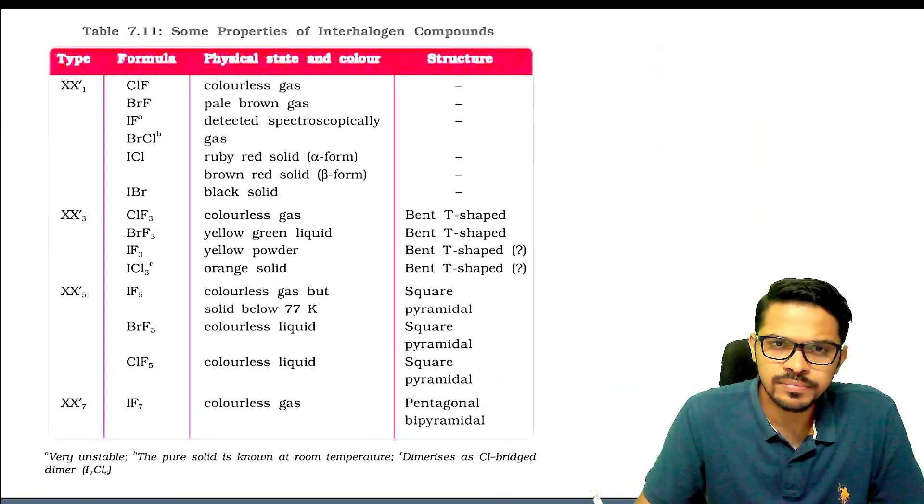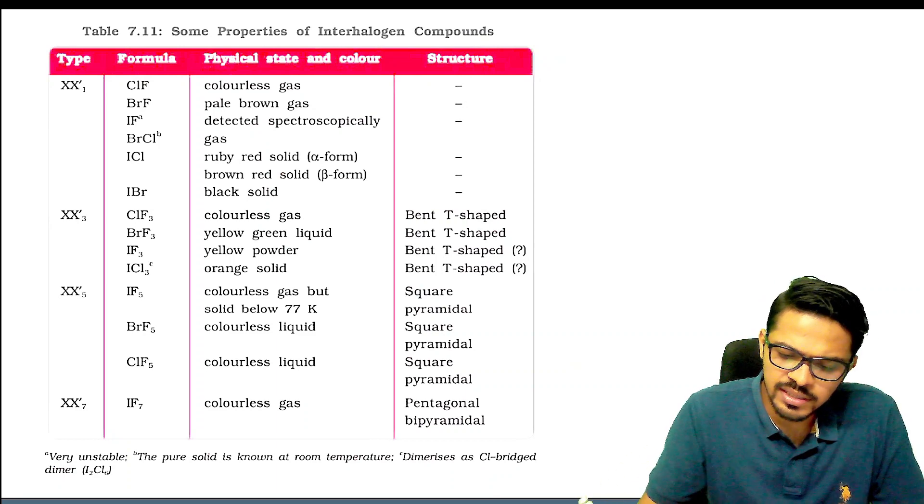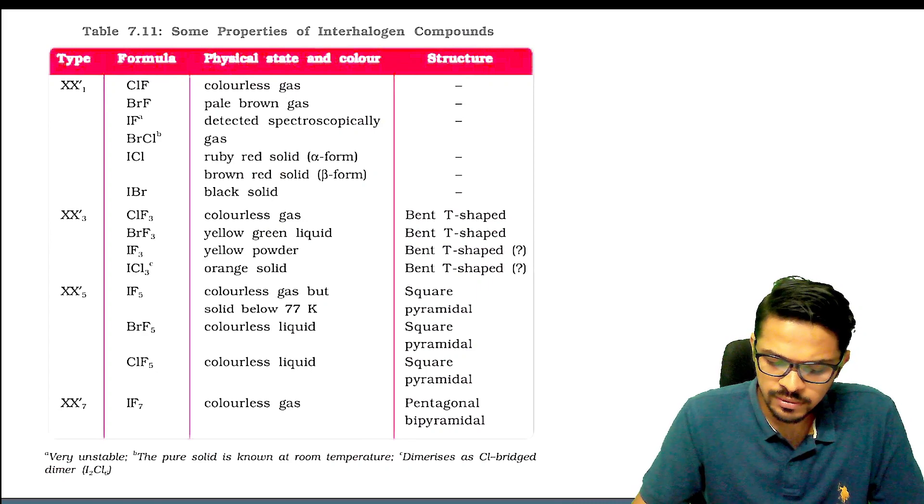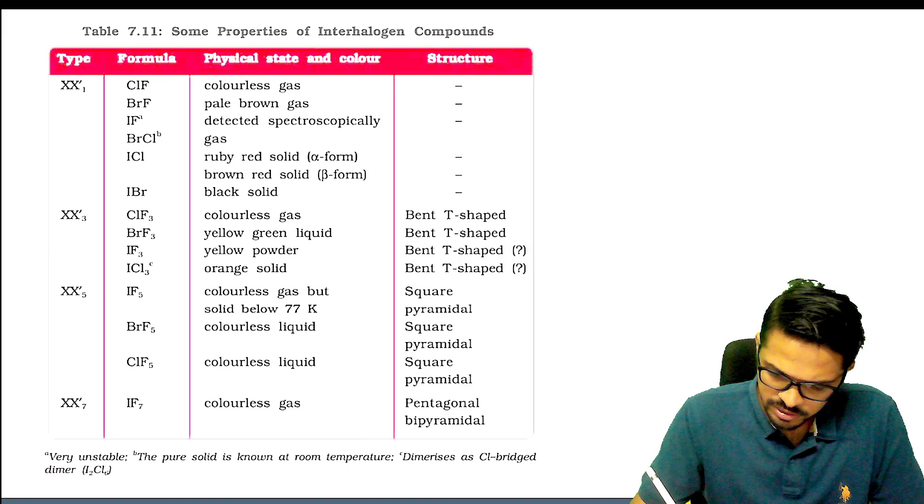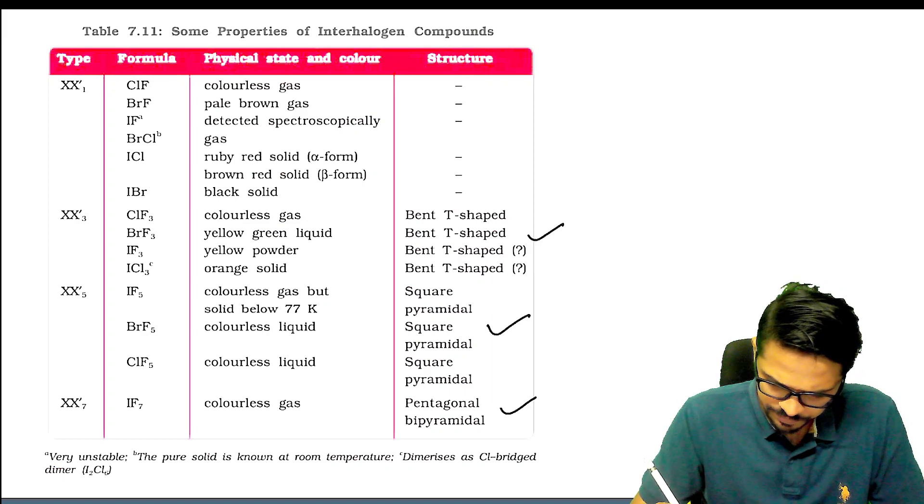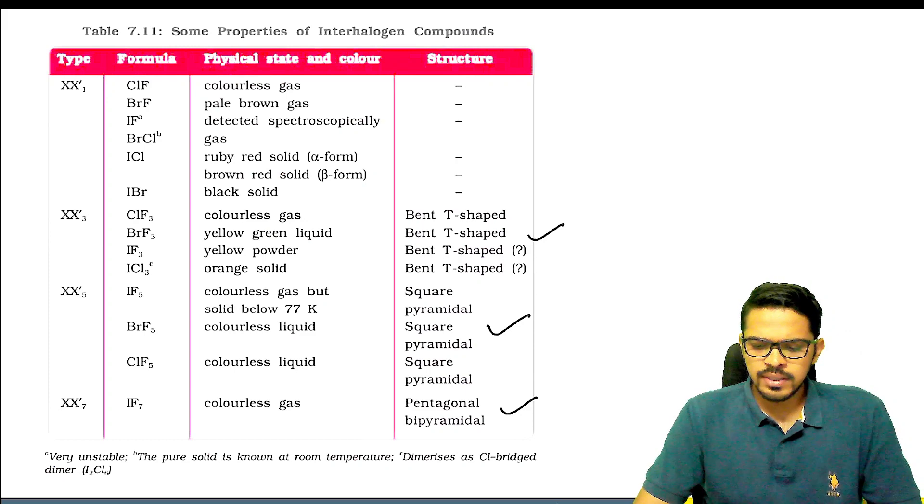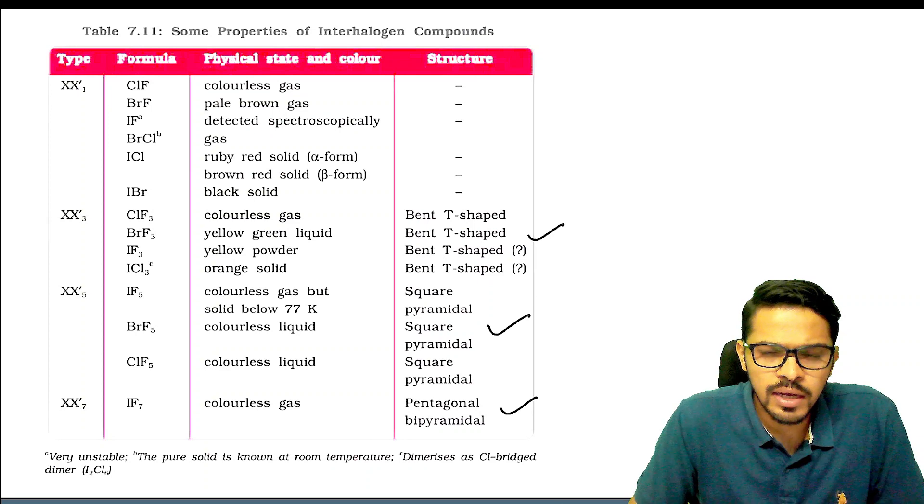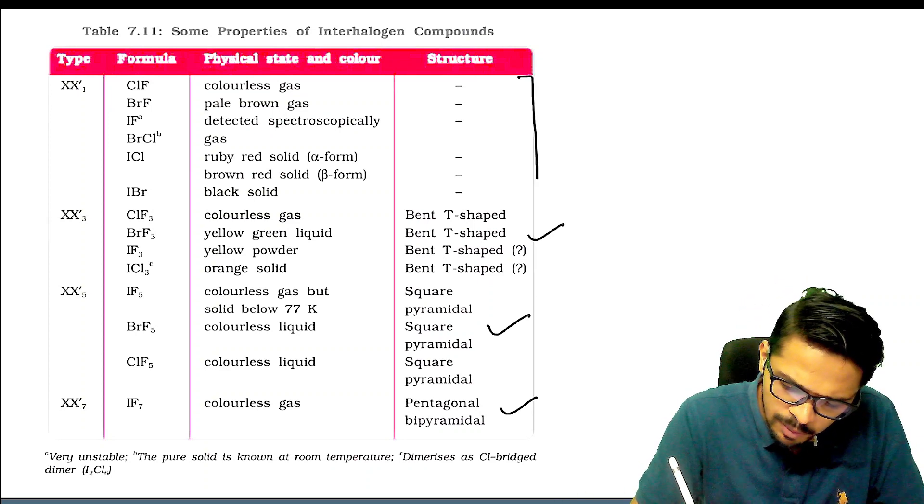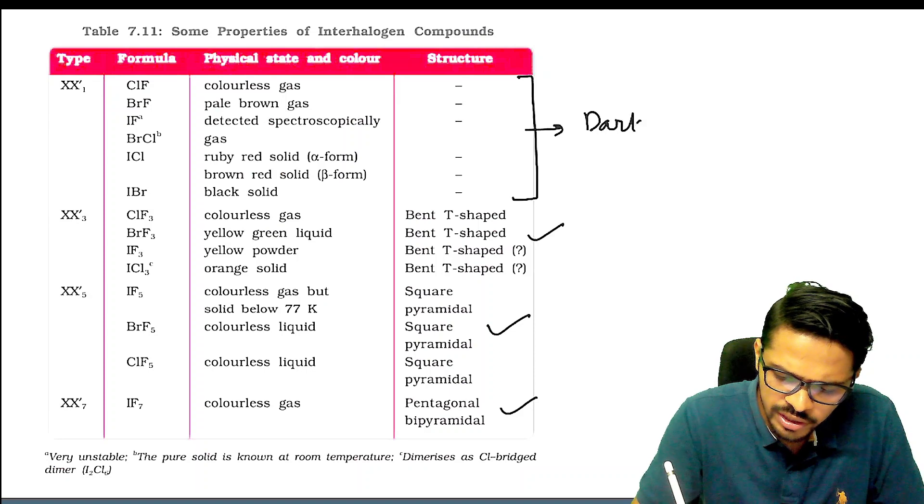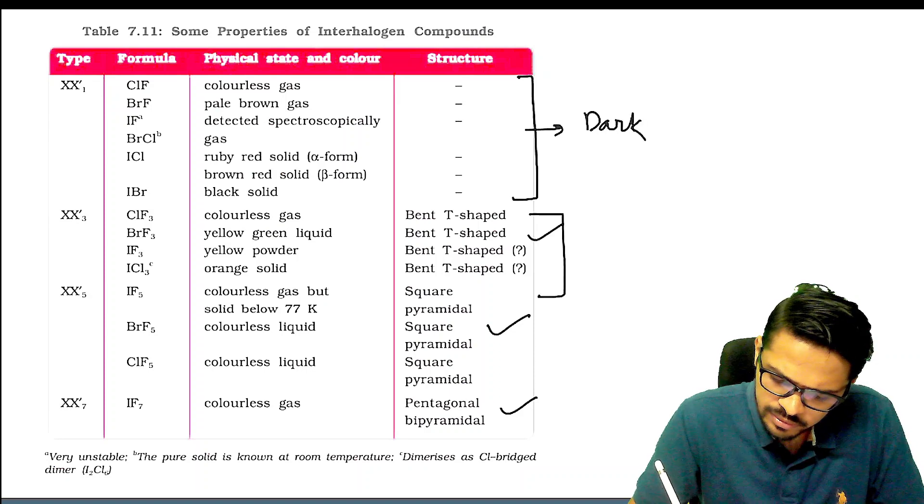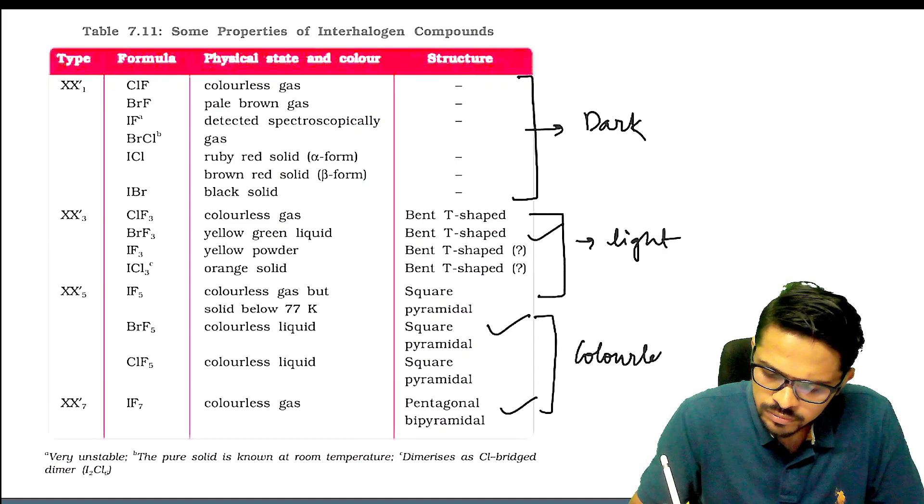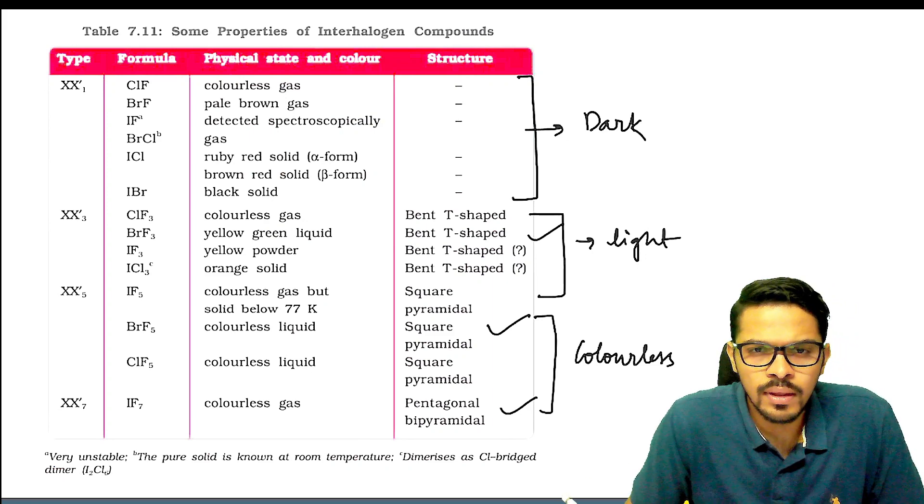Let's look at this table that we've distributed. You can see here total 14 different types of interhalogen species. We have seen their structure, shape. There is bent T-shape, there is bipyramidal, and then pentagonal bipyramidal. If you observe the color changes, you'll see initially the colors are darker, and as we go down they become lighter. Some are almost colorless.